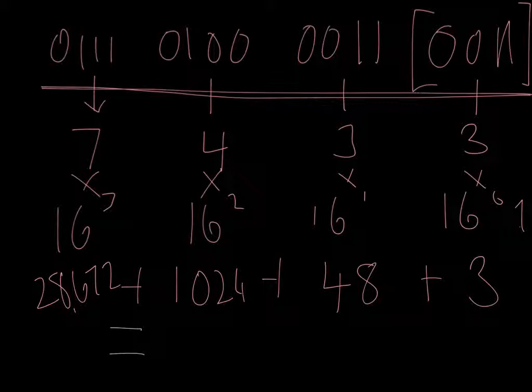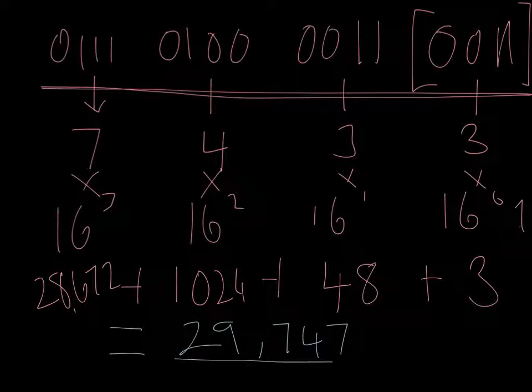And then we take 16 to the power 3 multiplied by 7 to give us 28,672. And then for our final answer we just total those up. So 28,672 plus 1024 plus 48 plus 3 gives us a total of 29,747. Which would have taken us quite a while if we counted up that the old way that we've been doing for all of our binary up until we learned about hex.